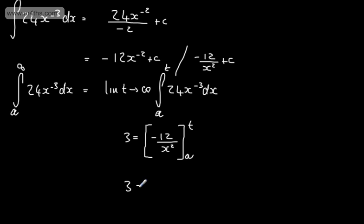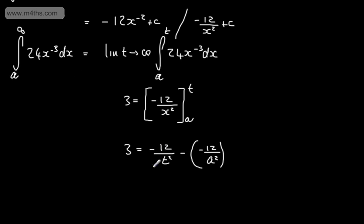So 3 will be equal to minus 12 over t squared minus minus 12 over A squared. We can see as t tends to positive infinity, this will tend to 0.